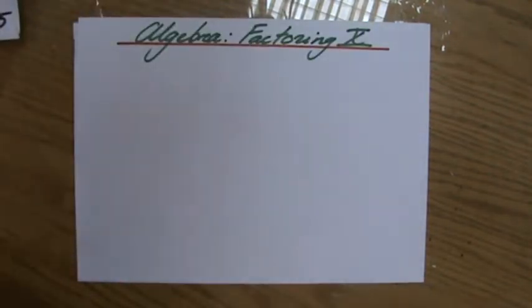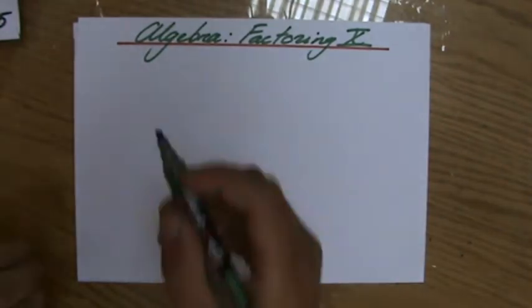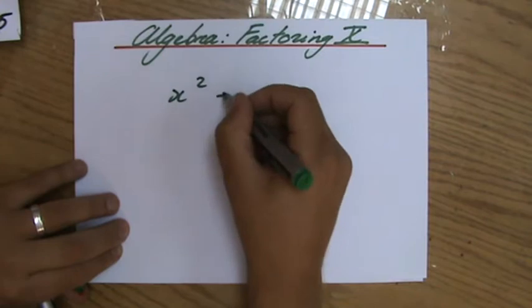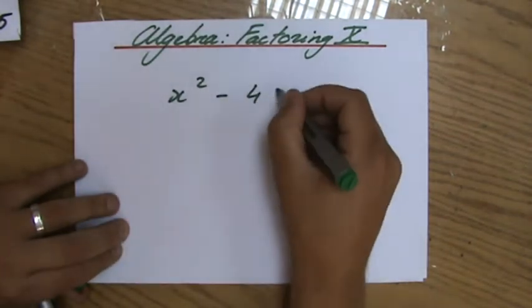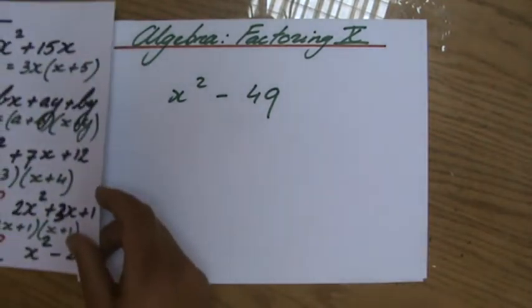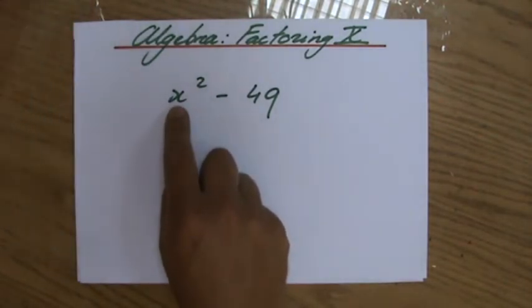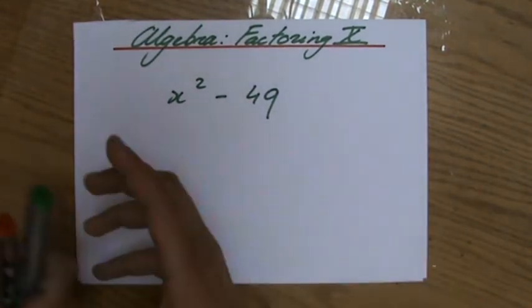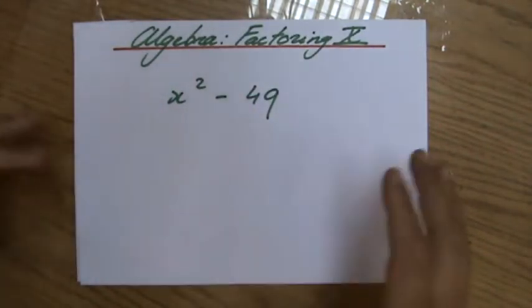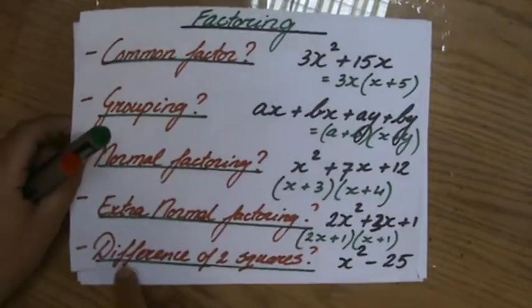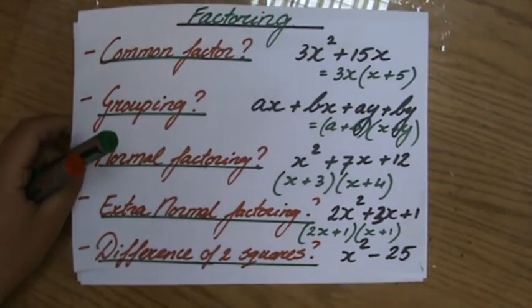If I give you an example, the difference of two squares, for instance x squared minus 49. Now if you have seen my previous videos, the first question you ask is there a common factor? Well, there is not. Is this grouping? Of course not, because it doesn't have four terms. Is this normal factoring? No, because it doesn't have three terms. Extra normal? No, because it only has two terms. So actually, the other one left is the difference of two squares.